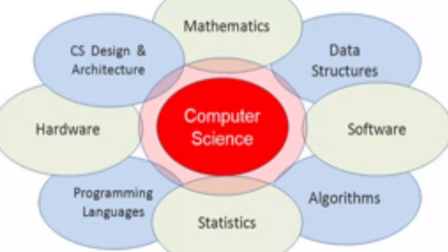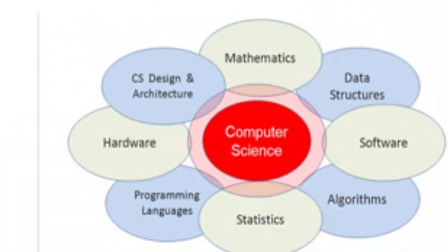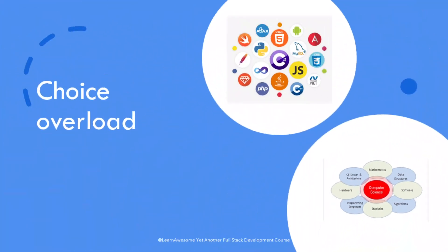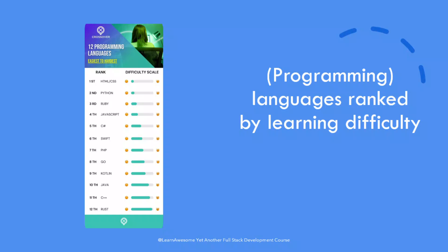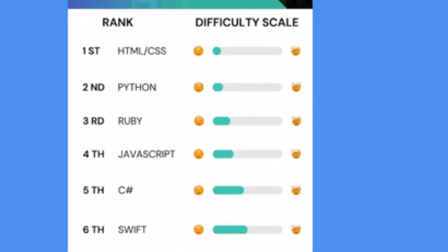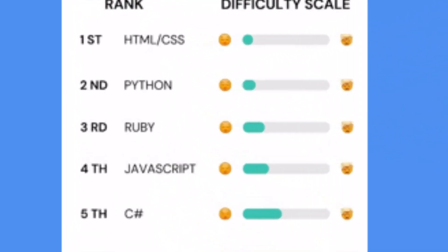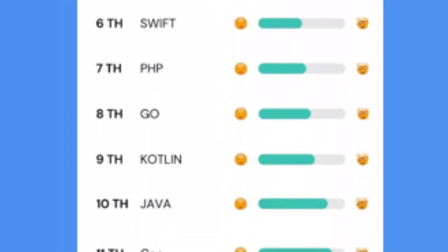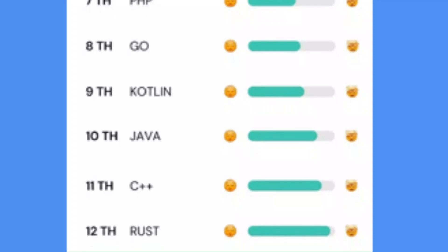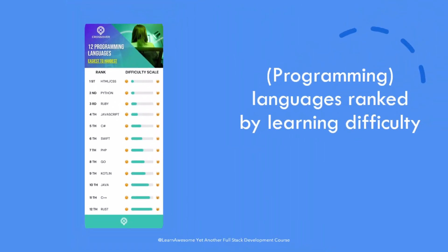Even if you pick an option, you keep doubting whether you made the right choice or made a mistake. If you focus on programming and programming languages, each programming language has its own level of complexity, areas where it is more efficient in solving problems, and practical considerations like can you achieve your goals with that skill — like finding a job, doing freelance projects, being your own boss, or whatever your goal is.